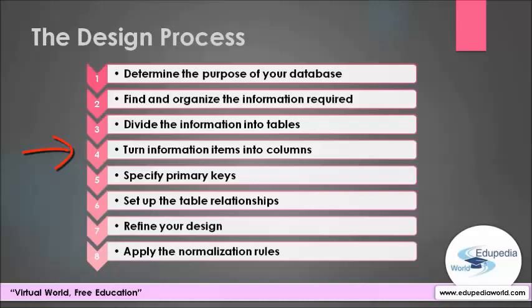The fourth step is to turn information into columns. Decide what information you want to store in each table — each item becomes a field displayed as a column in the table. For example, an employee table might include fields such as last name and hire date. The fifth step is to specify primary keys. Choose each table's primary key — a column used to uniquely identify each row. For example, product ID or order ID are the primary keys of the product table and order table.